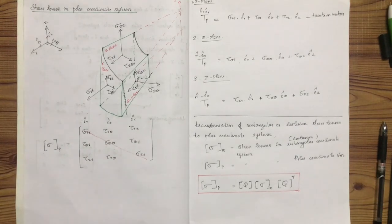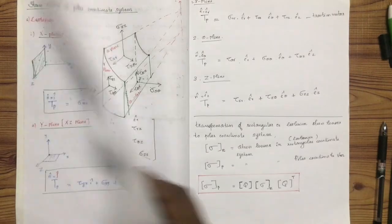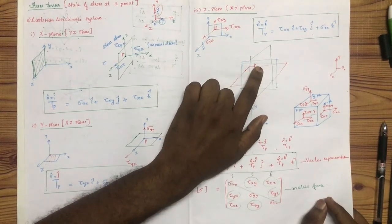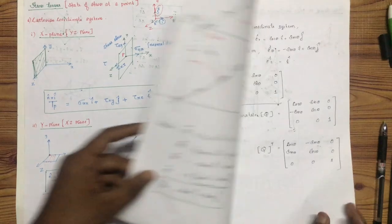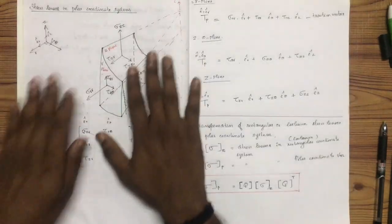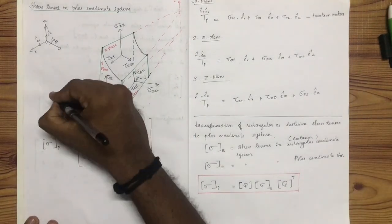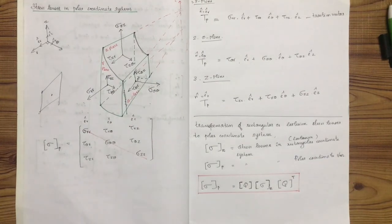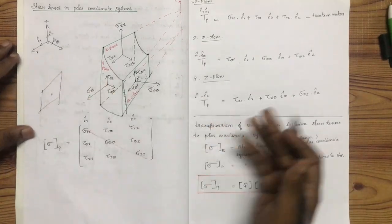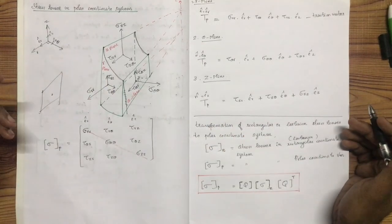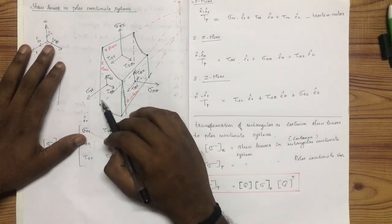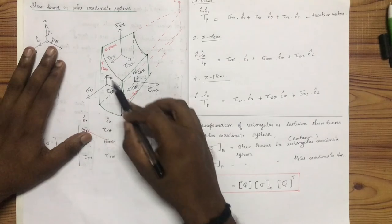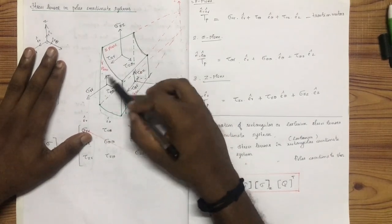We have a stress tensor in x-plane, y-plane, z-plane. This is a cubicle element. If we have a stress tensor in a rectangular plane, it is mutually perpendicular. If we have polar coordinates, we have a cylindrical element. This is an arbitrary plane — it is inclined, it is not x-plane or y-plane. We have three stresses on the x-plane.